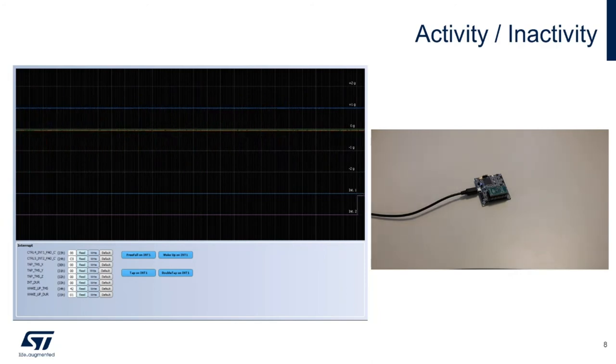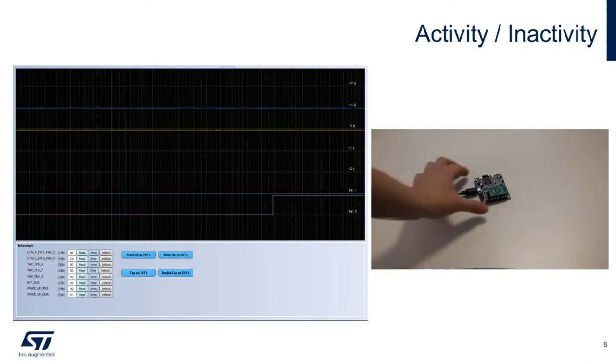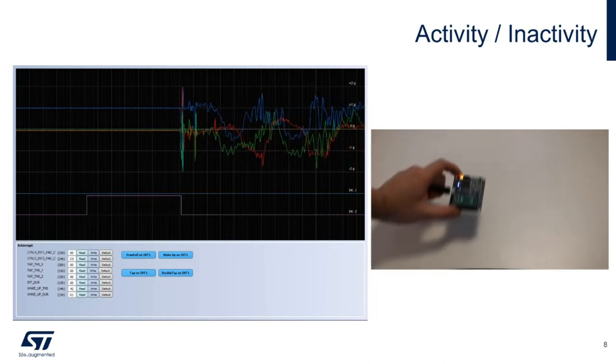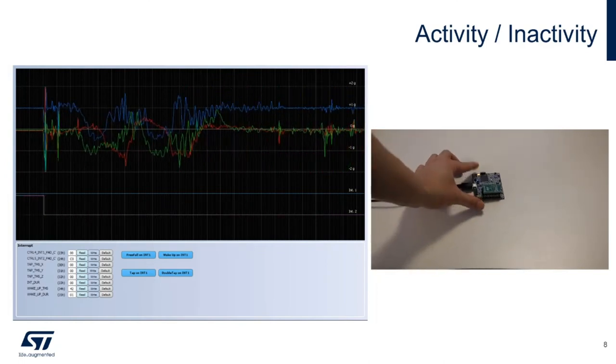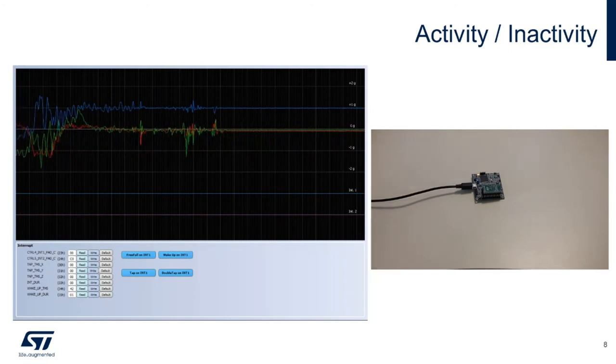After a while, the sensor node will automatically detect that there is no motion and raise the interrupt pin 2 back again, as you can see on the left-hand side of this slide. So doing it once more, you apply motion, interrupt pin 2 goes low, and then after a while, you leave the board sitting, and the device will enter in ultra-low power mode, or sleep mode as well.